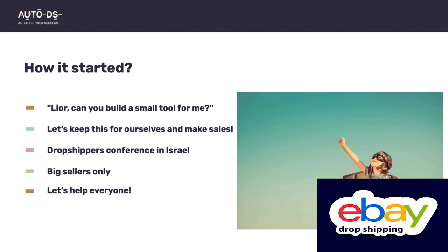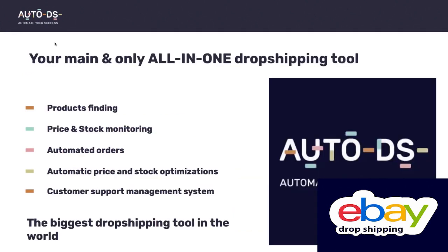We went to a dropshipping conference in Israel and showed people the tool we had built. The reaction was amazing — people said: why don't you publish it for everyone? We started by adding big sellers from the conference to use the tool, saw it worked really well, and first opened it only for big sellers. Then we decided to open AutoDS for everyone. That's how it started — we implemented features for our own stores and then gave them to users too.